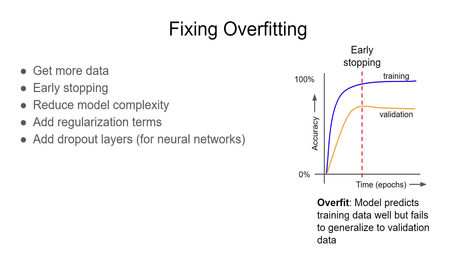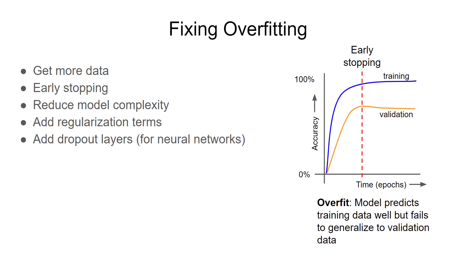Dropout is a technique used with neural networks that randomly ignores the output of some nodes during training. This forces the remaining nodes, or neurons, to take on more responsibility for fitting to the data. As a result, it can often reduce overfitting by the whole model. If you run across underfitting or overfitting, these can be some good techniques to try. A lot of machine learning is tweaking your data, features, or model, retraining, and then seeing how well the model works with unseen data. A lot of it is just guessing and learning what works and what doesn't.